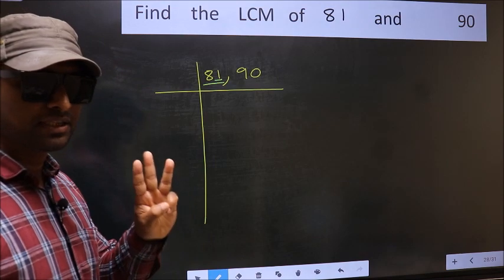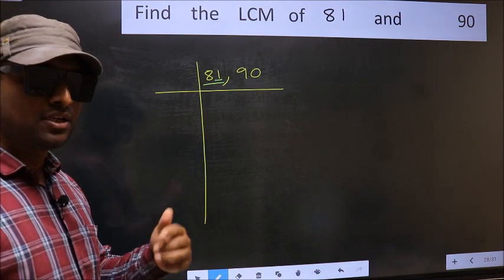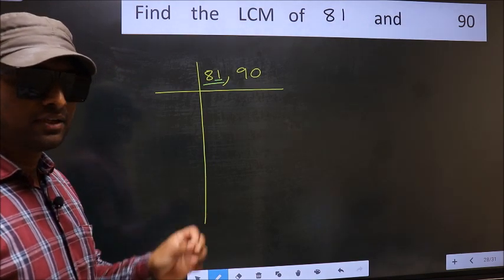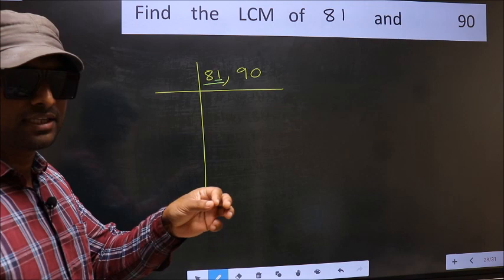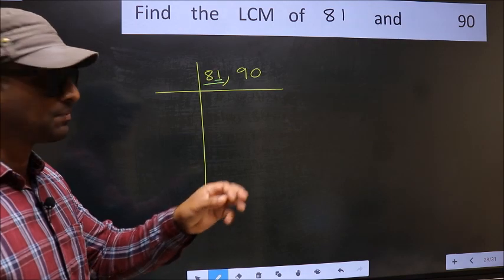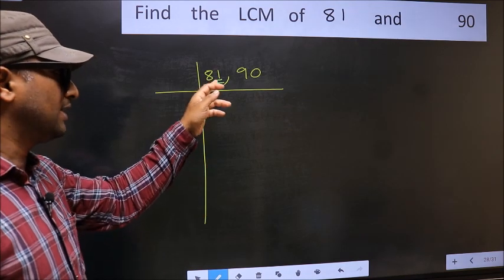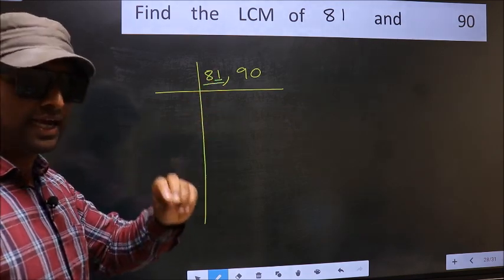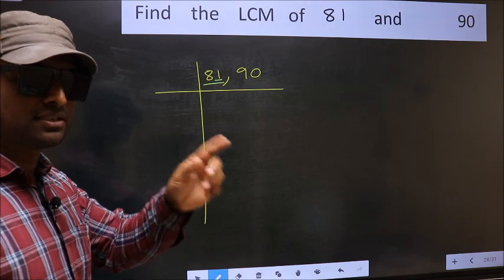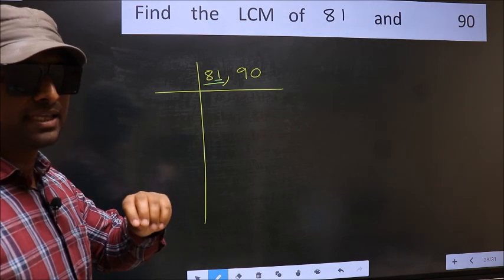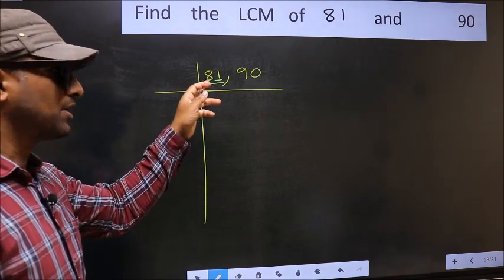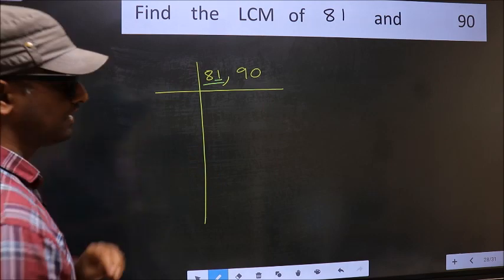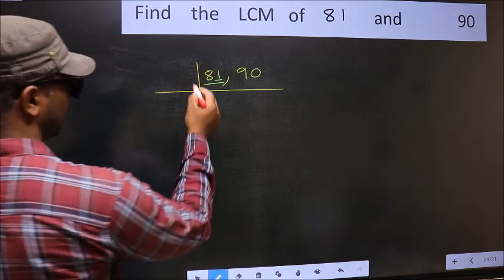The next prime number is 3. To check divisibility by 3, we add the digits: 8 plus 1 equals 9, and 9 is divisible by 3. So this number is also divisible by 3. Take 3.